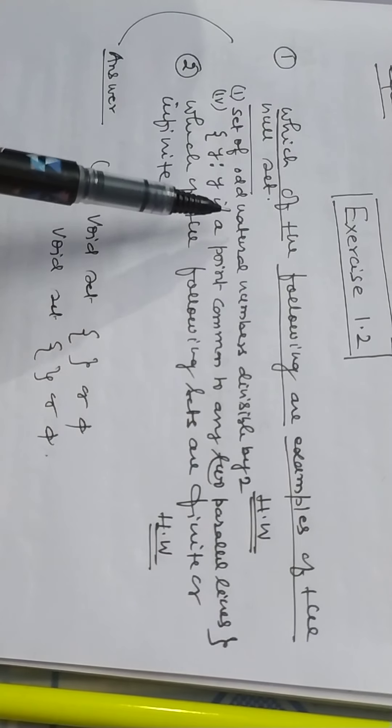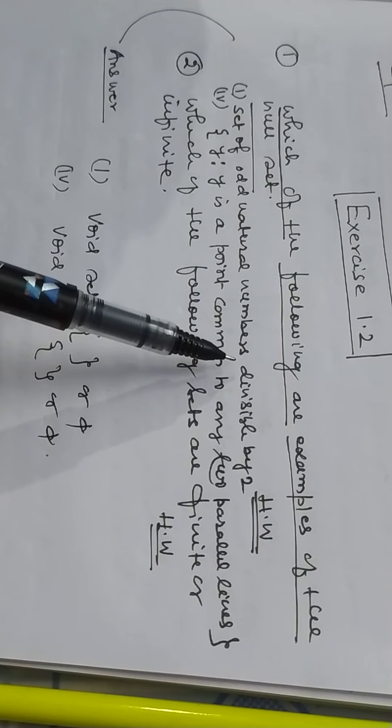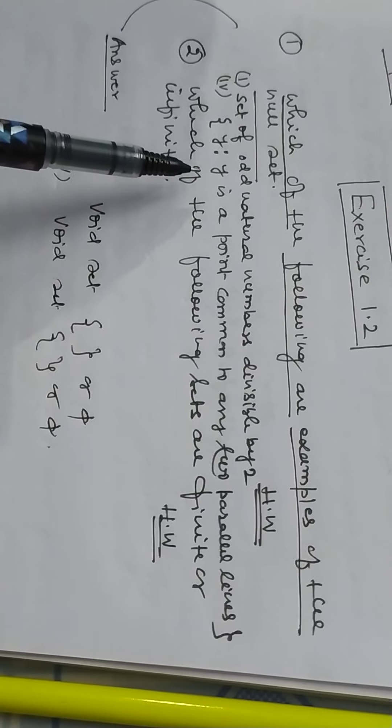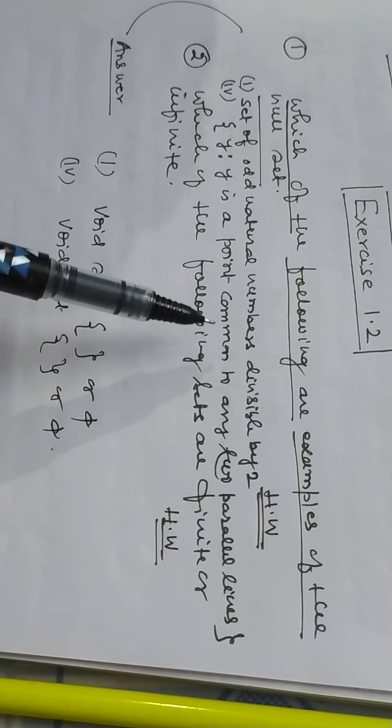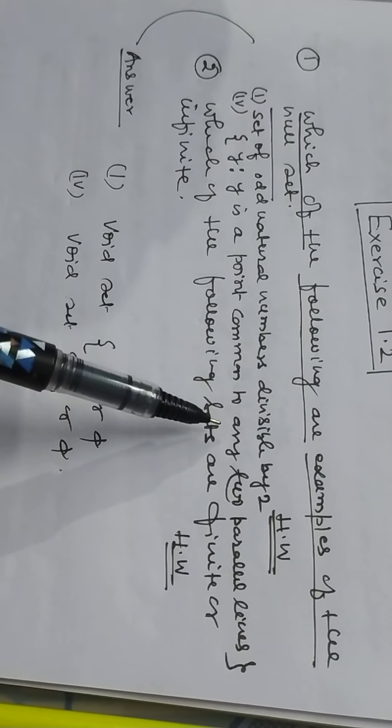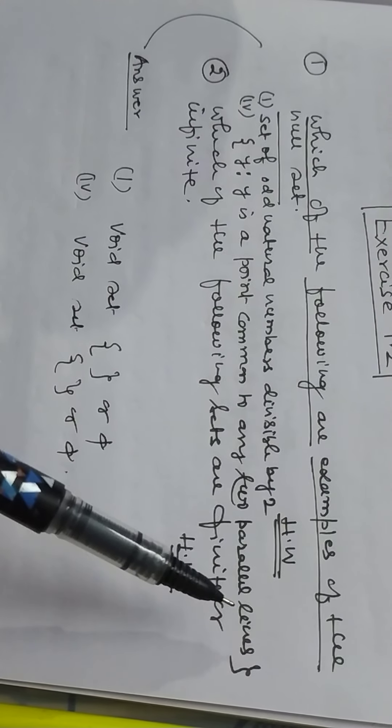A: set of odd natural numbers divisible by 8. B: collection of element Y is a point common to any two parallel lines.